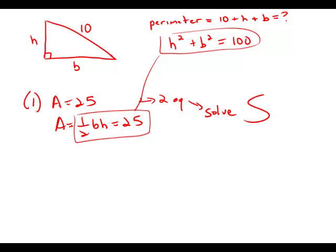So forget statement number one now and focus purely on statement number two. Statement number two is a very different kind of information. Statement number two tells us that the two legs of this triangle are equal.